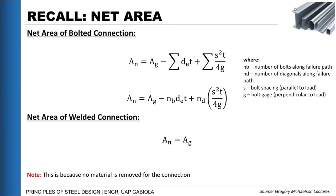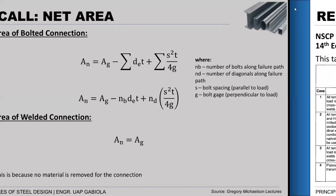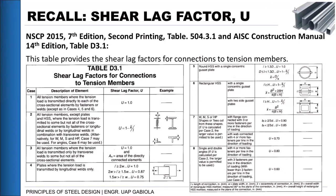For welded connections, since no holes are punched in the element, the net area is assumed equal to the gross area. We also discussed the shear lag factor U from NSCP Table 504.3.1. We select the shear lag factor using the table — there are eight cases depending on section type. Typically Cases 1 and 2 are used for tension members. When other cases apply, we compare all applicable values and use whichever is maximum.